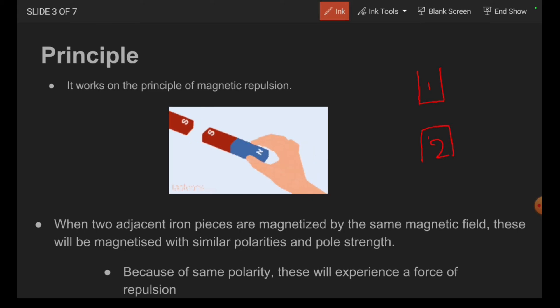When these two adjacent iron pieces are magnetized by the same magnetic field, these will be magnetized with similar polarities. Either it may be north pole and north pole or it may be south pole and south pole with the same pole strength. Because of these polarities, let it be the two soft iron pieces are south poles, these will experience a force of repulsion.